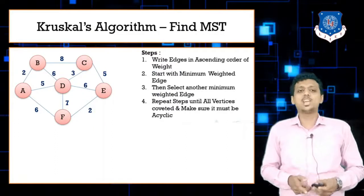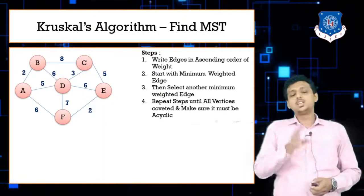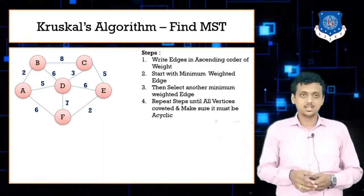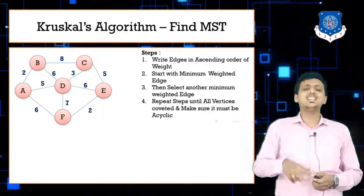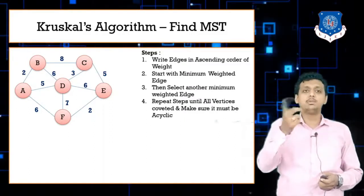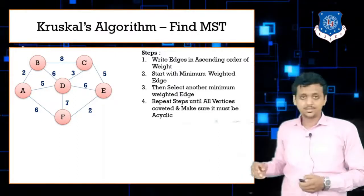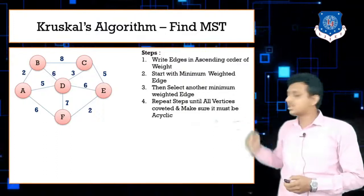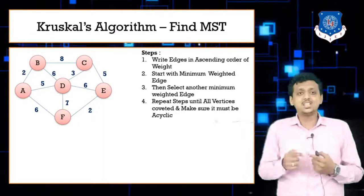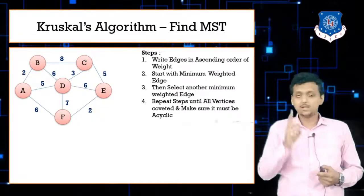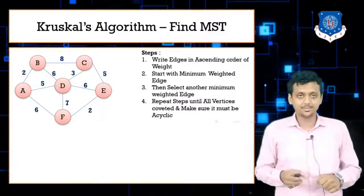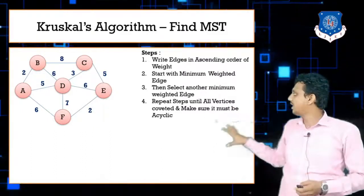Here are the steps for Kruskal's algorithm. First, you need to arrange all edges in ascending order of weight. Step two: from the ascending order, start picking the edge with the minimum weight and begin drawing the Kruskal's figure. Make sure that when you are selecting edges, your spanning tree should not be cyclic. Repeat the steps until all nodes are minimally connected.